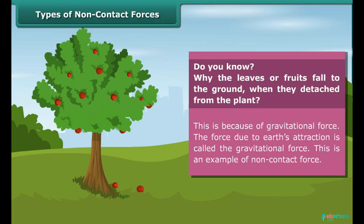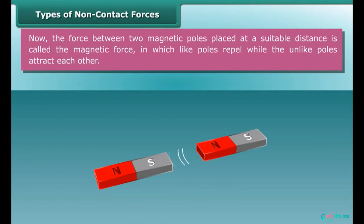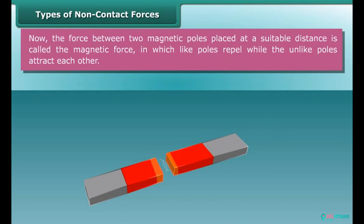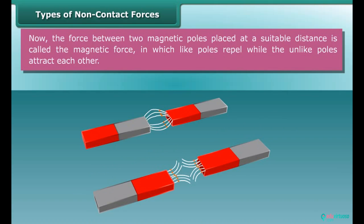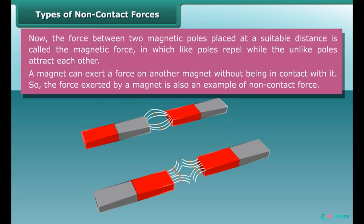Now the force between two magnetic poles placed at a suitable distance is called the magnetic force in which like poles repel while the unlike poles attract each other. A magnet can exert a force on another magnet without being in contact with it. So, the force exerted by a magnet is also an example of non-contact force.